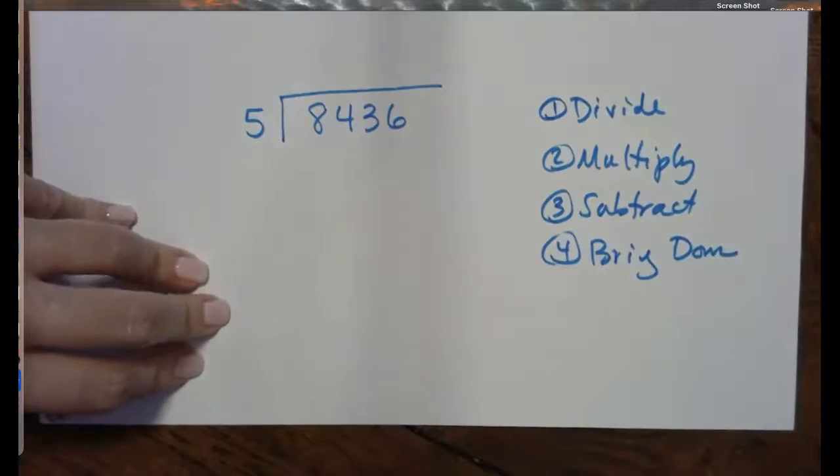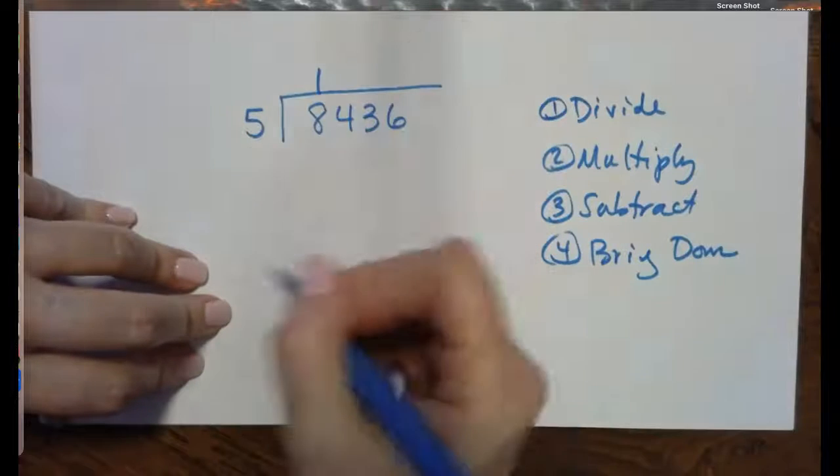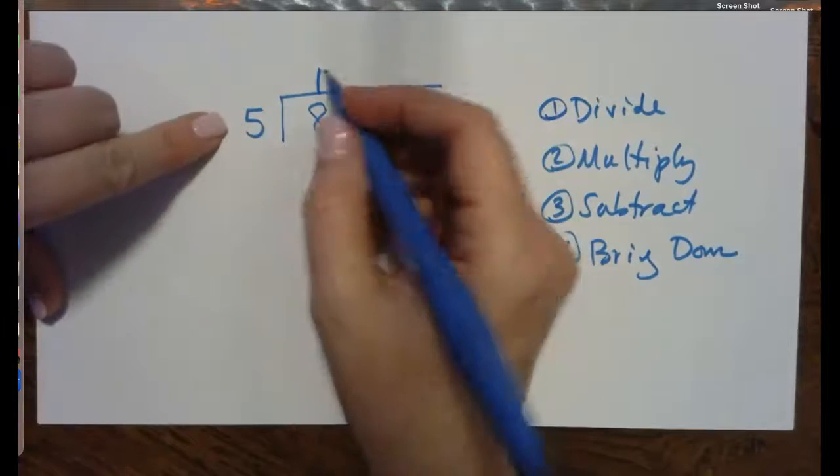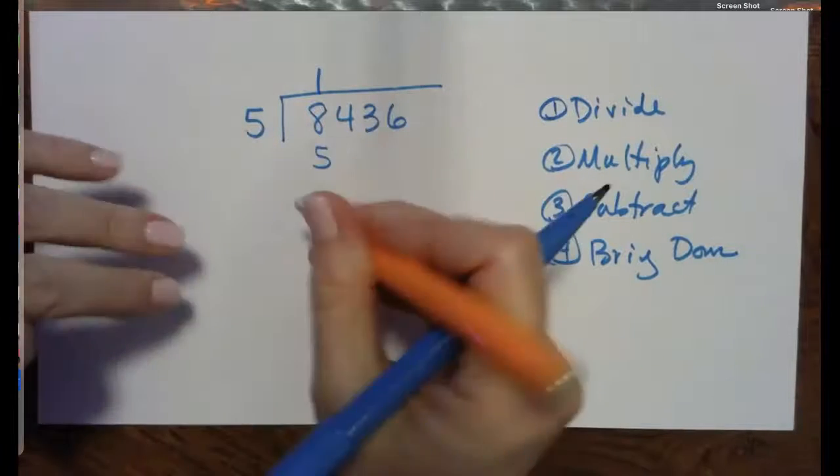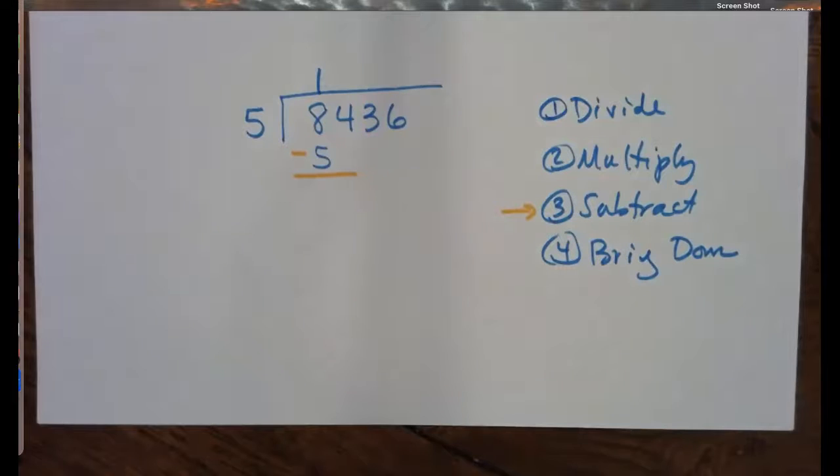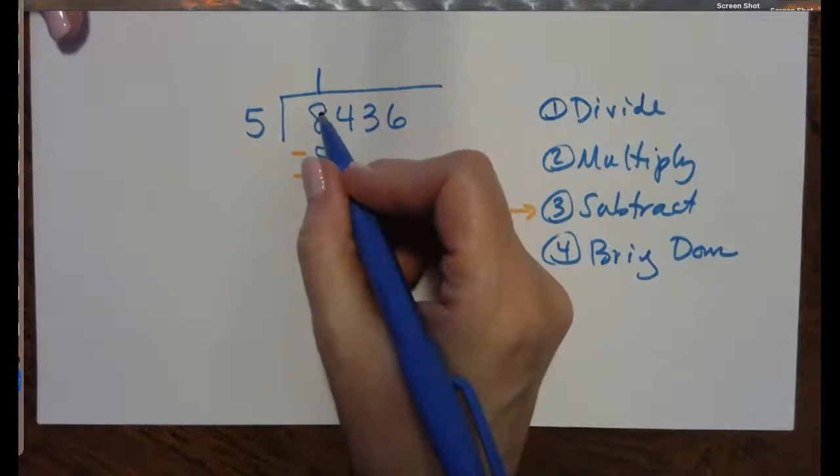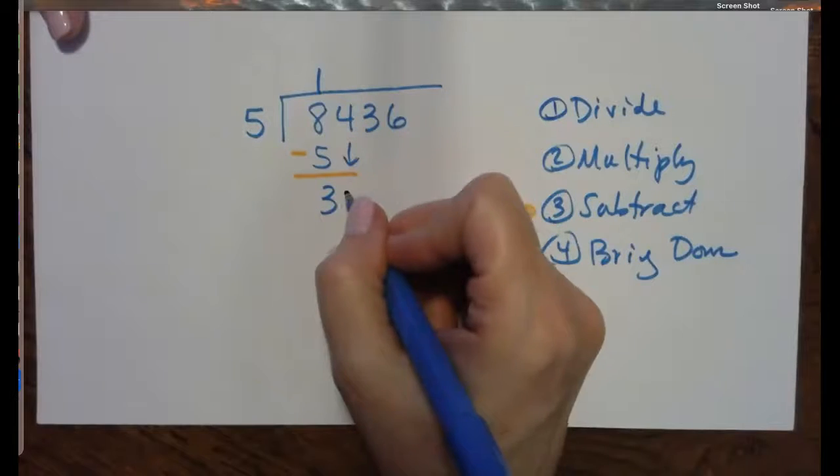So that's what we're going to do straight away. 5 goes into 8 one time. We just divide it. Now we're going to multiply it. 1 times 5 is 5, and we are going to draw the line and change the sign, which of course means the same thing as subtracting.